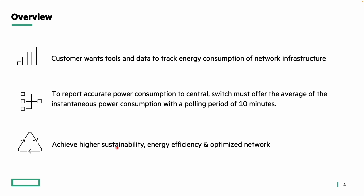The switch must offer the average of the instantaneous power consumption with a polling period of 10 minutes. This helps achieve higher sustainability, energy efficiency, and an optimized network. Monitoring power consumption over time provides insights into power requirements of the network infrastructure to Central. This data can be used for capacity planning, helping allocate resources effectively and ensuring there is sufficient power available to support the network's growth.